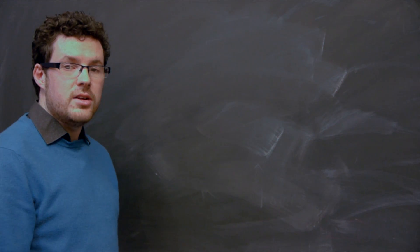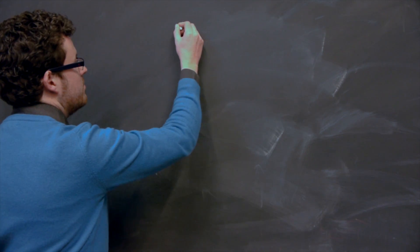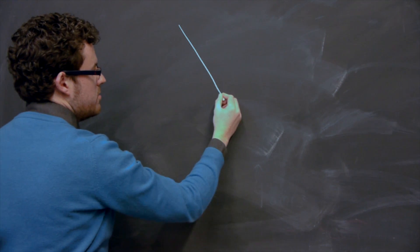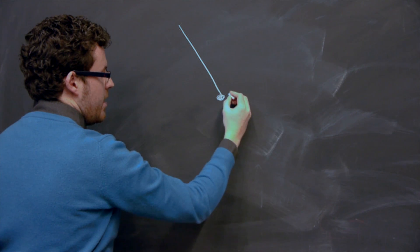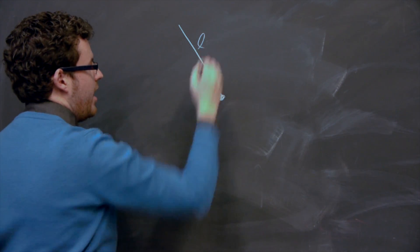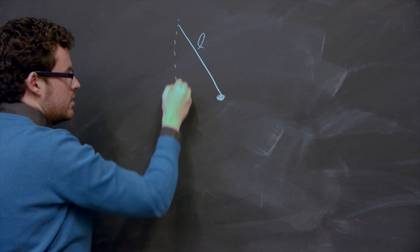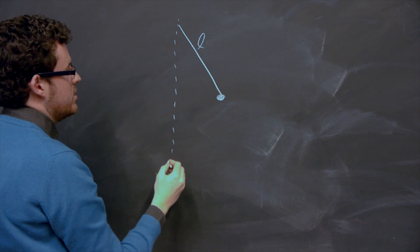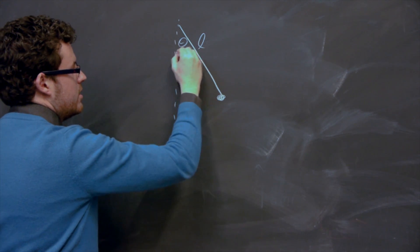So we can measure little g using the simple pendulum. And the simple pendulum is just a mass M on a string of length L that is free to oscillate around a fixed point with an angle theta.